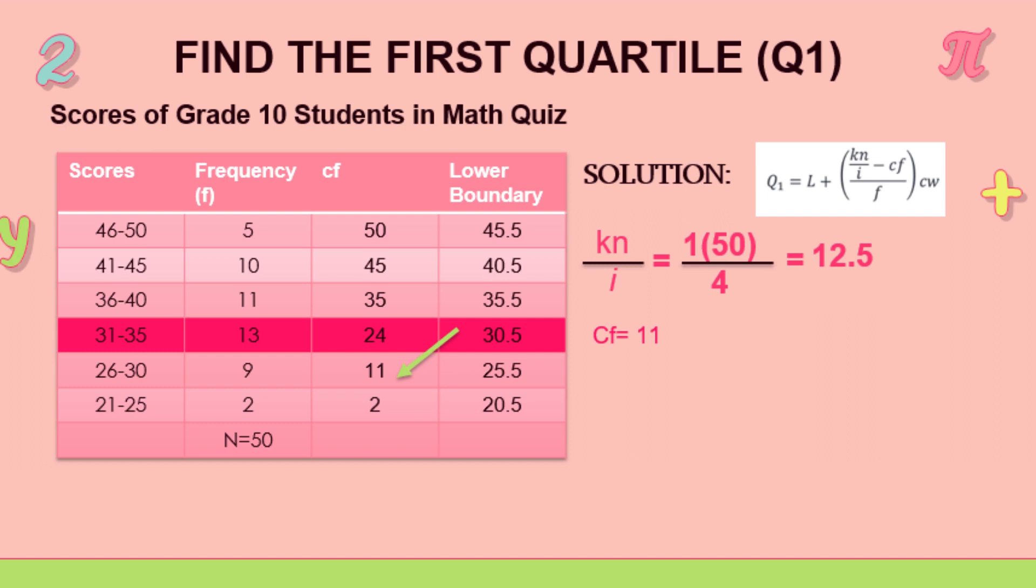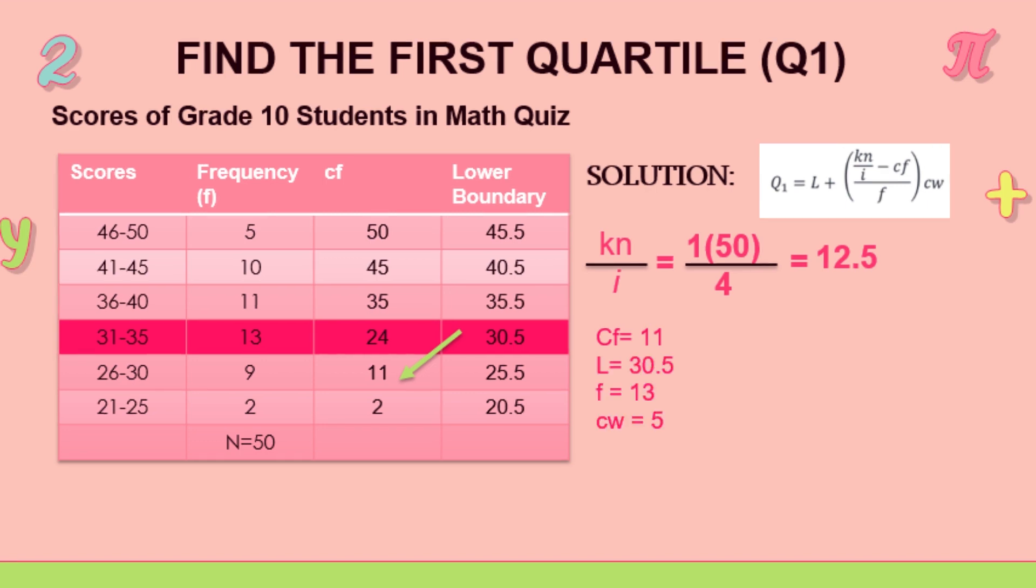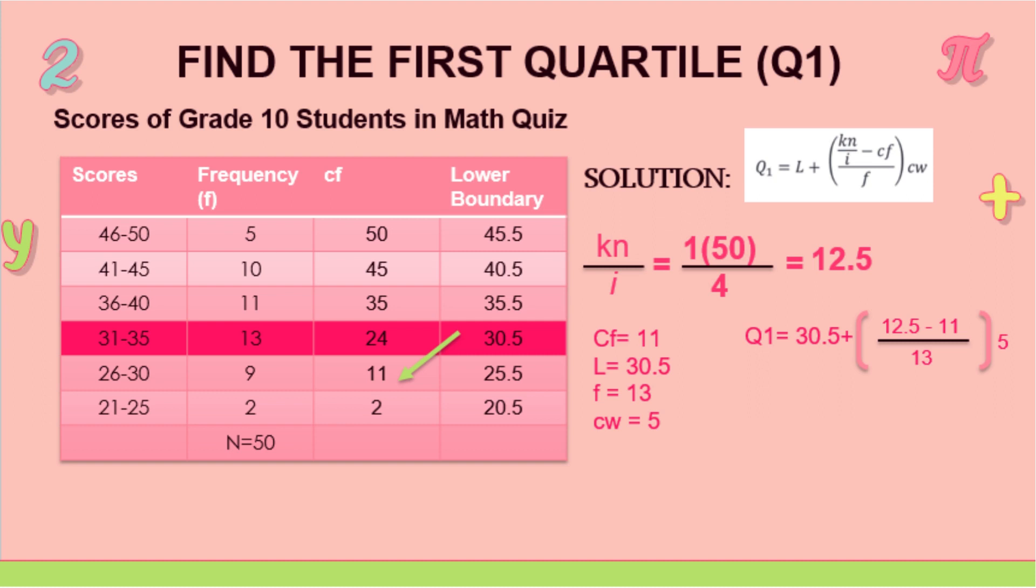But we are going to get the 11 because we said earlier the preceding class. We're going to get 11 for the cumulative frequency, and then the lower boundary is 30.5, the frequency is 13, and the class width is 5. Next, this is how we solve it. So 30.5, we have 12.5 minus 11 over 13 times 5.